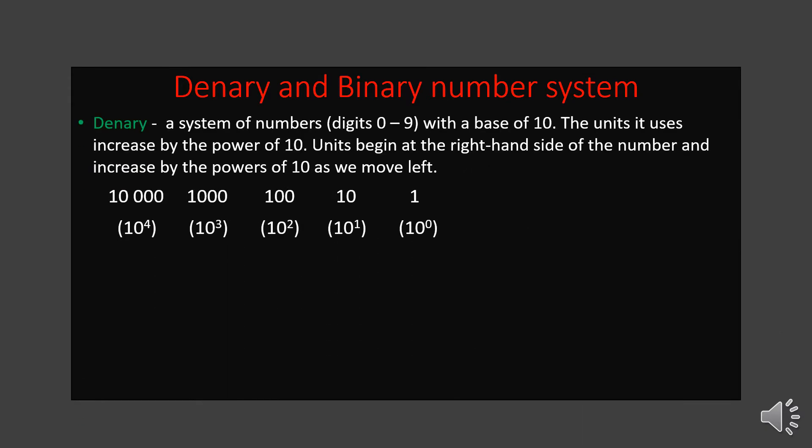Now we will see the difference between the decimal and binary number systems. The decimal system has digits 0 to 9 and a base of 10. The units increase by powers of 10: 10, 100, 1000, 10,000, and so on. When writing a decimal number we start from the right hand side — 10 to the power 0 equals 1, 10 to the power 1 equals 10, 10 to the power 2 equals 100, and so on towards the left.